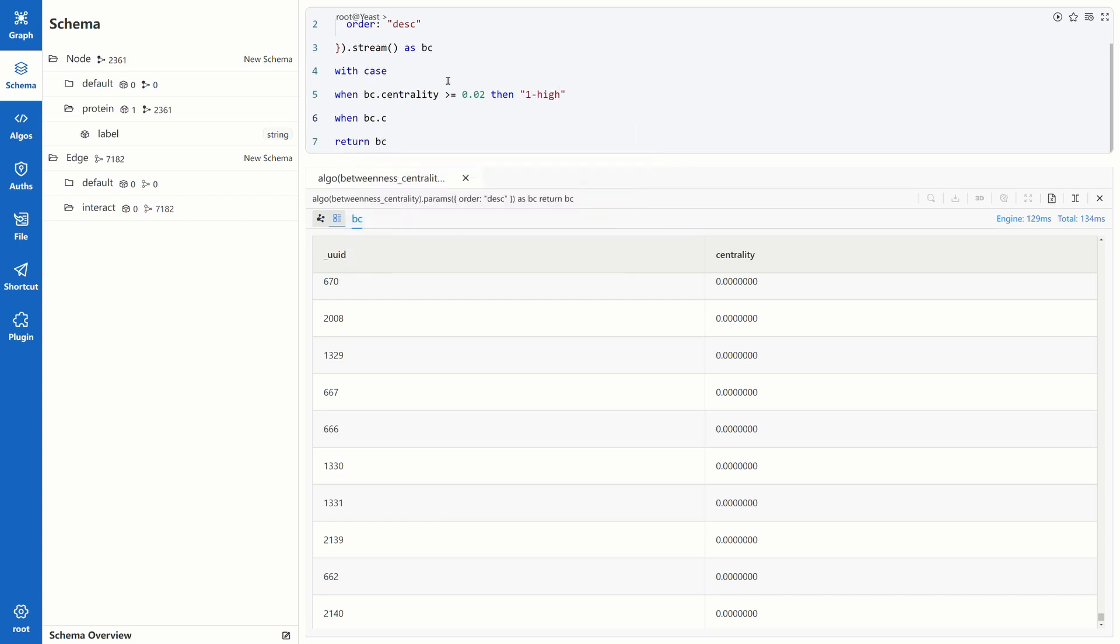And when bc.centrality is between 0.01 to 0.02 or equals to 0.01, then give it tag 2-median. When bc.centrality is between 0 to 0.01, then give it tag 3-low. Else covers all the other conditions. And now the only left condition is when the score equals to 0. So the tag would be 4-0. Write end to close the function and define alias to the function results as distribution.